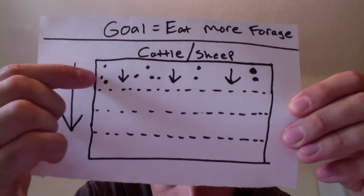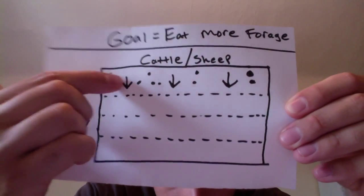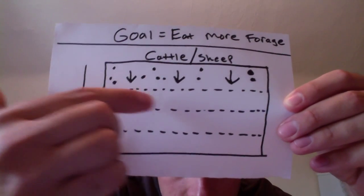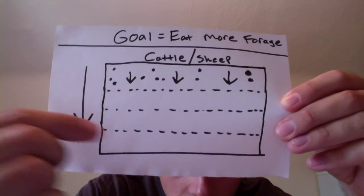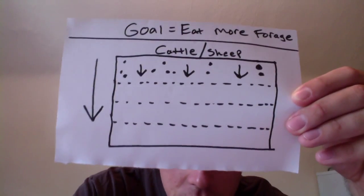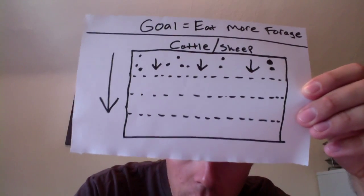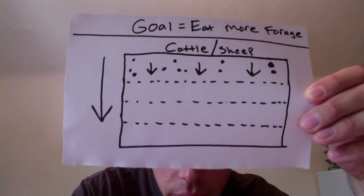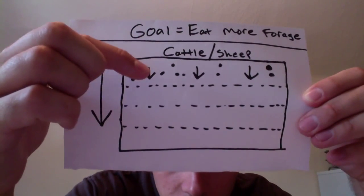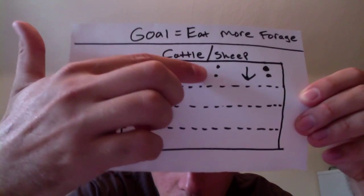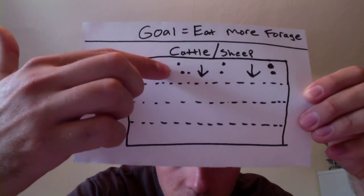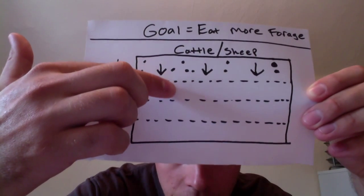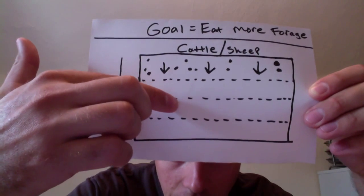And all these little dots in here are the cattle or sheep. And all the dotted lines that are going horizontally across the page, that is my symbol for a polywire polybraid. That's your electric fence. What you're going to do is when your cattle and sheep are in a paddock like this, you just move your polywire down like this.